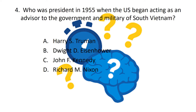Question four: who was president in 1955 when the US began acting as an advisor to the government and military of South Vietnam? Was it Harry S. Truman, Dwight D. Eisenhower, John F. Kennedy, or Richard M. Nixon? It was Dwight D. Eisenhower.